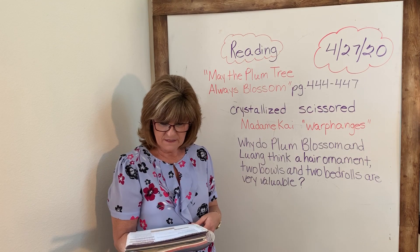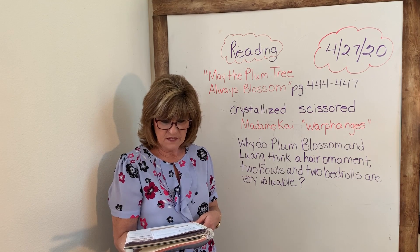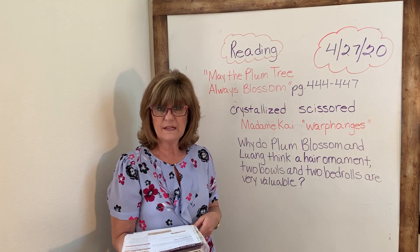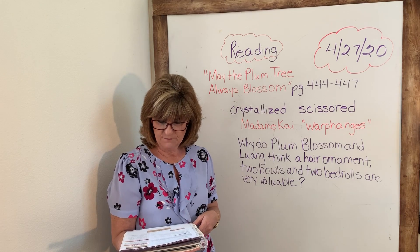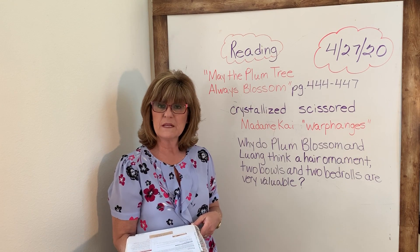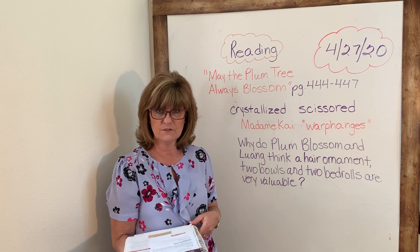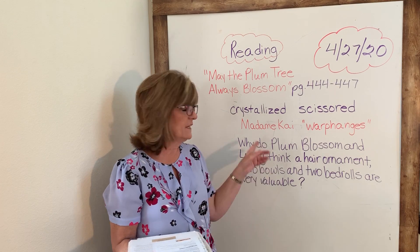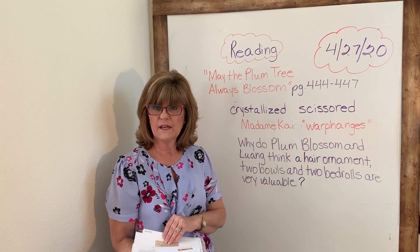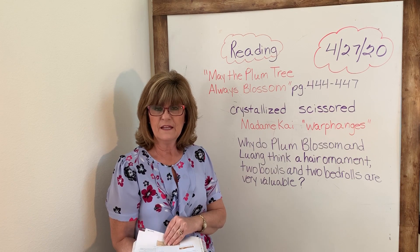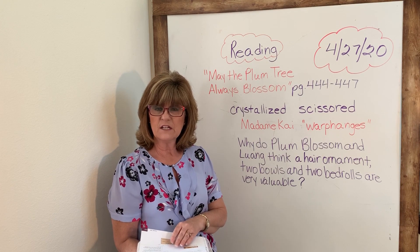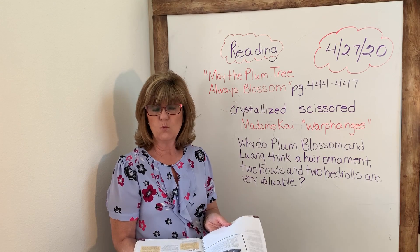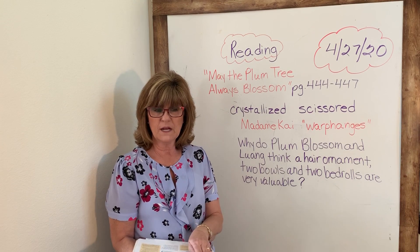Madame Kai set up these orphanages so that the children could receive shelter, food, and education, and she paid for many of the expenses herself. And so that's where we find our two main characters, Plum Blossom and her brother Luang, in a city called Hang Chao, in an orphanage run by Madame Kai.